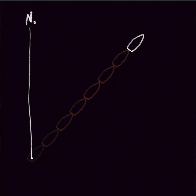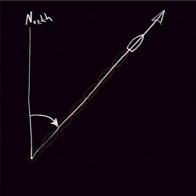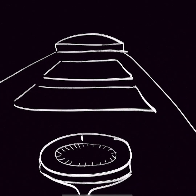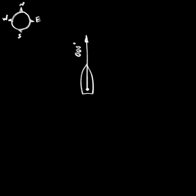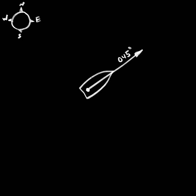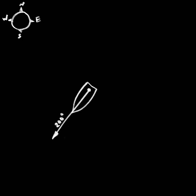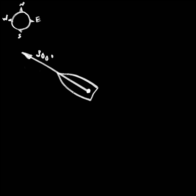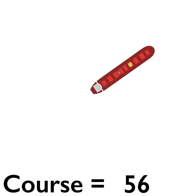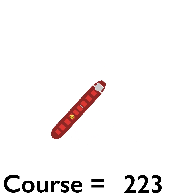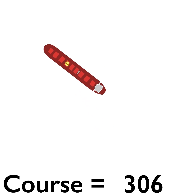If you want to describe the direction of movement of your marine vessel, in nautical navigation there is a special term: the course. The course is the direction where your marine vessel looks, and it doesn't matter whether your vessel is moving or not. The course shows the direction of your bow. It is measured in degrees from 0 to 359.